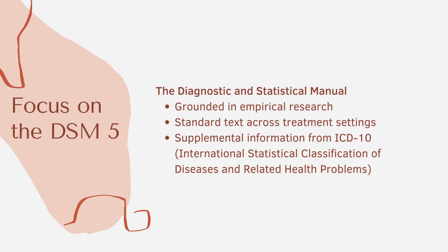Whether you have the DSM-5 or the DSM-5-TR, it doesn't matter to me. I'll be talking mostly about the 5-TR, but feel free to use whichever text you can get your hands on. The DSM is empirical, or based on research — it's the standard text used across treatment settings in the United States so that clinicians are all speaking the same language. Psychiatrists, psychologists, counselors, social workers, family therapists, medical doctors, and more all use the DSM. There are additional texts you'll hear about, like the ICD-10 — that's like a kissing cousin of the DSM — but for our purposes, you'll focus on the DSM in this course.